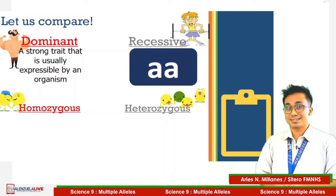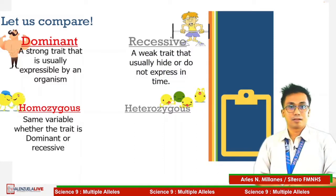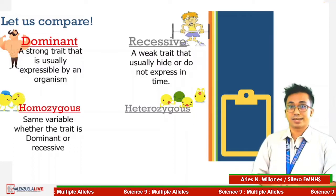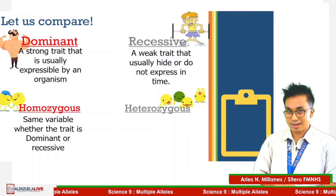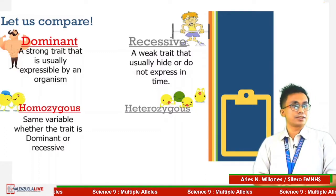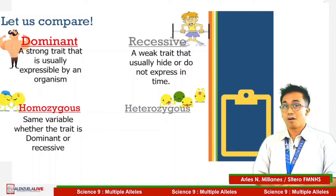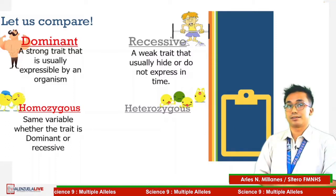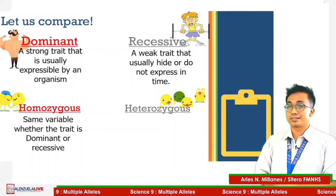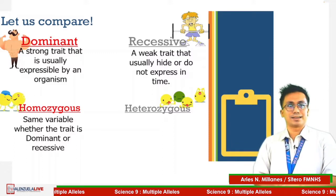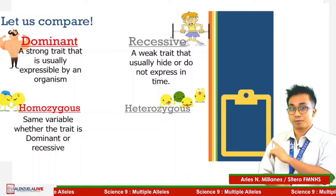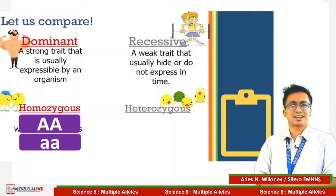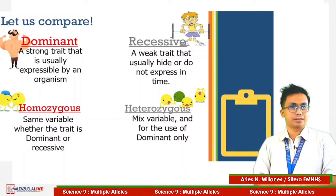Homozygous is a characteristic of an allele. When we say homozygous, it pertains that the allele is written in the same manner. If the first letter is a capital letter, the following letter should also be capital. On the other hand, if the first letter is in small letter, the second letter should be in small letter as well. Heterozygous, in contrast, is a combination of both capital and small letter.